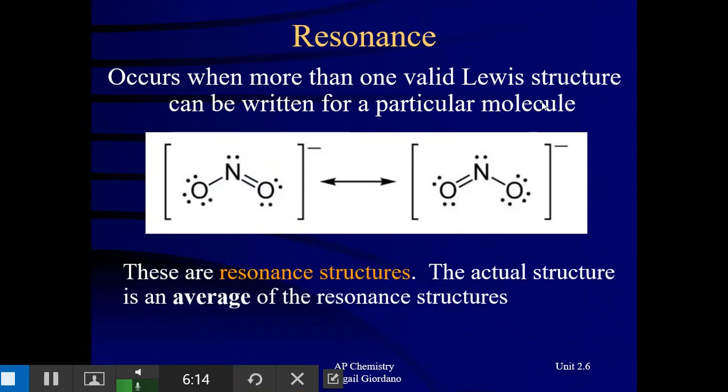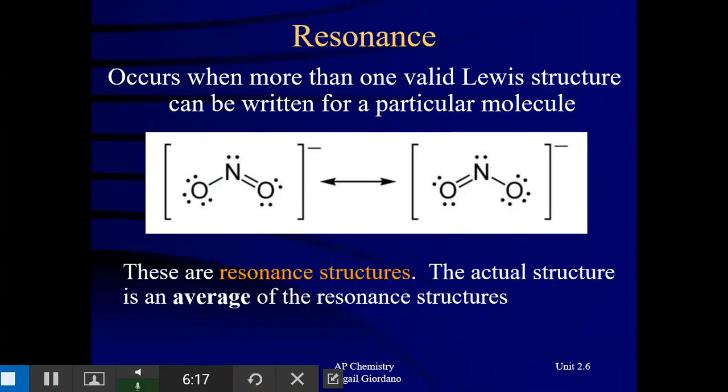If we look at a molecule like nitrite that does exhibit resonance, the actual true structure that is found through experimentation out in nature is an average of those resonance structures. Because there are delocalized electrons that can move around. This second pair of electrons does not stay in one location, but is actually split between these two locations.